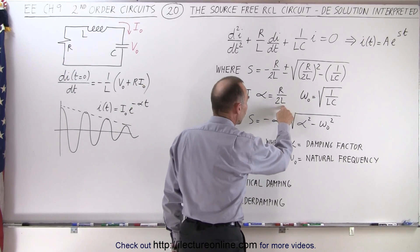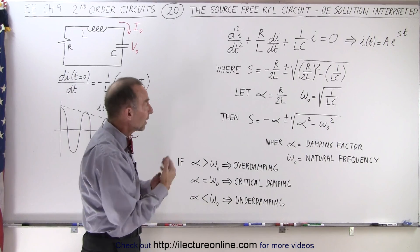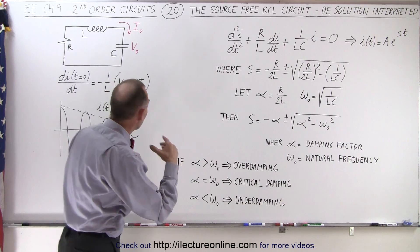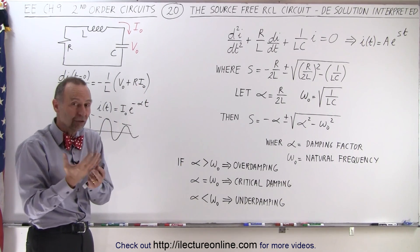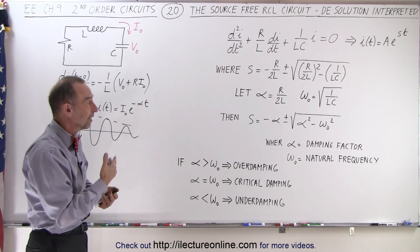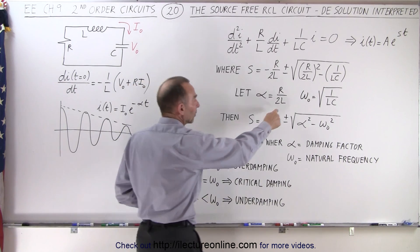The bigger L, of course, makes for a smaller alpha because the bigger the inductor, the smaller the current through the circuit, the less the resistor will take energy out of the system because the energy taken away from the circuit by the resistor is I squared R and if I is smaller because you have a bigger inductor, alpha will be smaller.